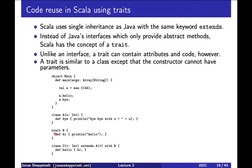When we do this constructor, it will just set the attribute and nothing else will happen. And then when we come to the hello method, that one is from C, so it will call hi from B, which will print hello. And then we use bye from A and it will print the attribute, which was a parameter.